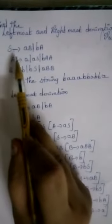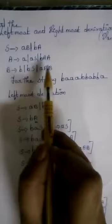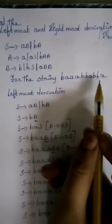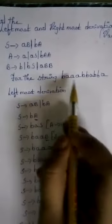Hi, today we are going to see about finding the leftmost and rightmost derivations and parse tree. Here it will be given as S turns to AB or BA, and A turns to AS or BAA. B turns to BBS or ABB. We have to find the string BAABB. We have to consider this string from the given string.